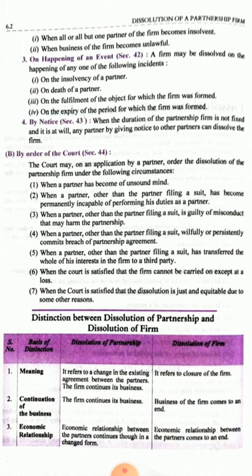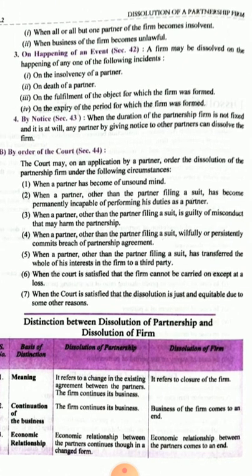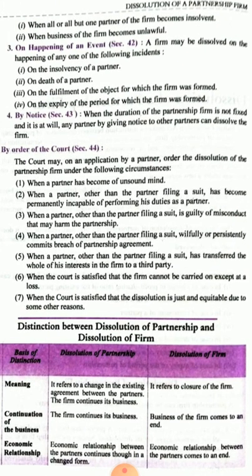Under Section 44, dissolution by court: when a partner has become of unsound mind; when a partner, other than the partner filing the suit, has become permanently incapable of performing his duties; when conduct of a partner may harm the partnership firm; or when the partnership firm has become unlawful — then the partnership firm is closed.